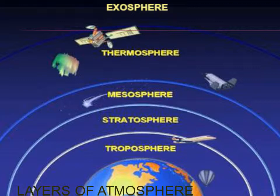Meteoroids or rock fragments burn up in the mesosphere. The thermosphere is a layer with auroras, and it is also where the space shuttle orbits the Earth. The atmosphere merges into space in an extremely thin exosphere — it is the upper limit of the atmosphere.